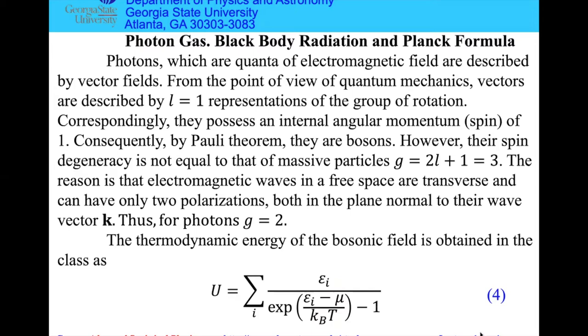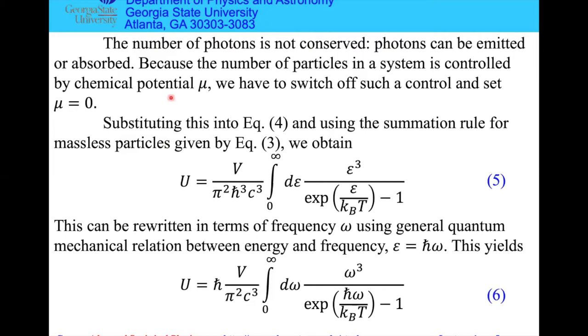What is important is that the number of photons is not fixed. Photons can be absorbed and emitted by molecules and atoms of the walls of the cavity where this photon field resides. Therefore, the number is not conserved. Mu, the only function of mu, is to regulate the number of particles. Here the number of particles is not defined, so we have to put mu equal to zero.